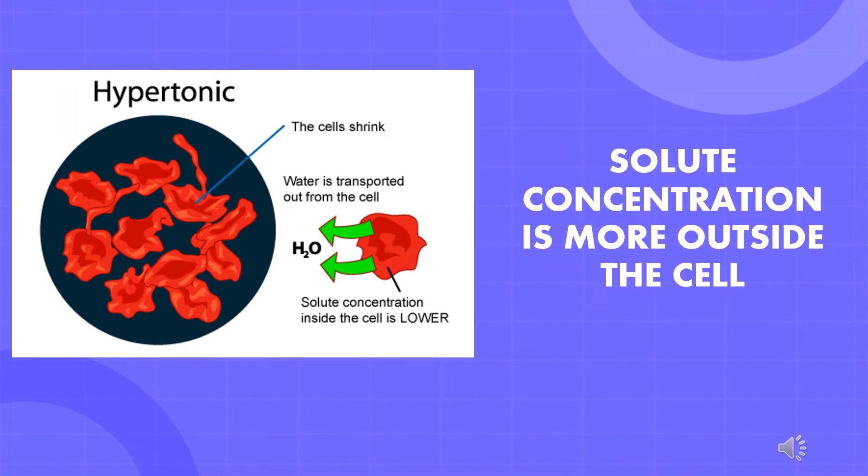Here you can see a hypertonic solution. In this condition, the solution outside the cell has a higher solute concentration than the fluids present inside the red blood cell. Consequently, the water molecules from the interior of the red blood cell will move out, causing the red blood cells to shrink.